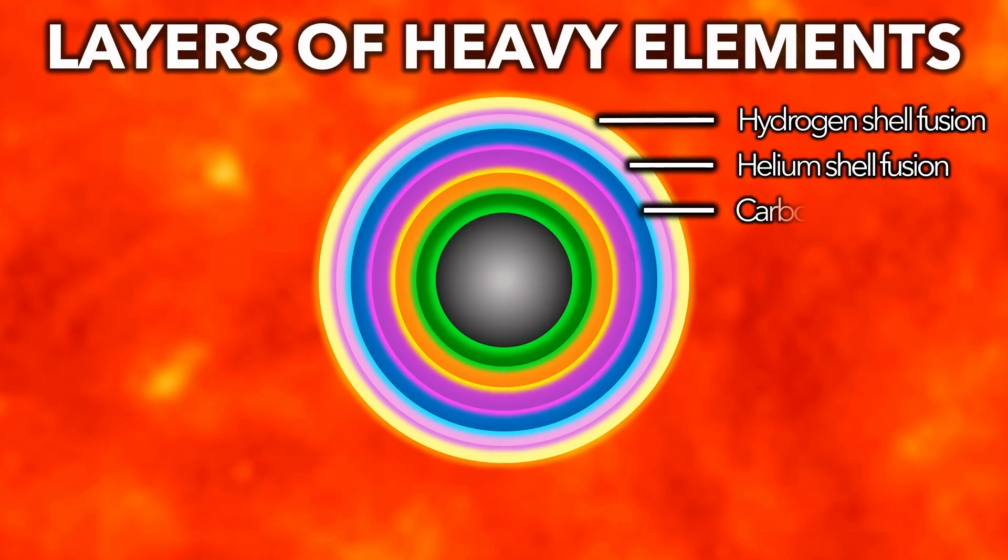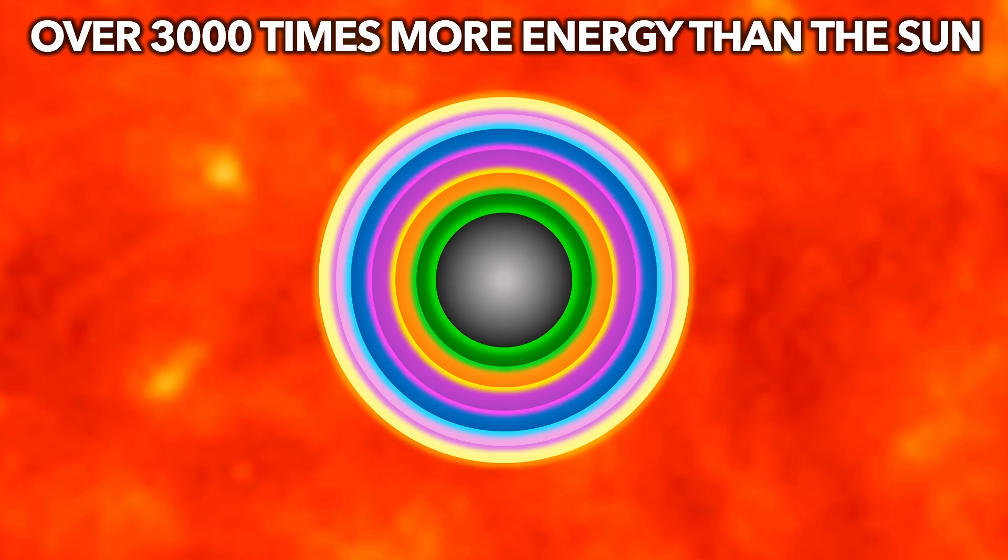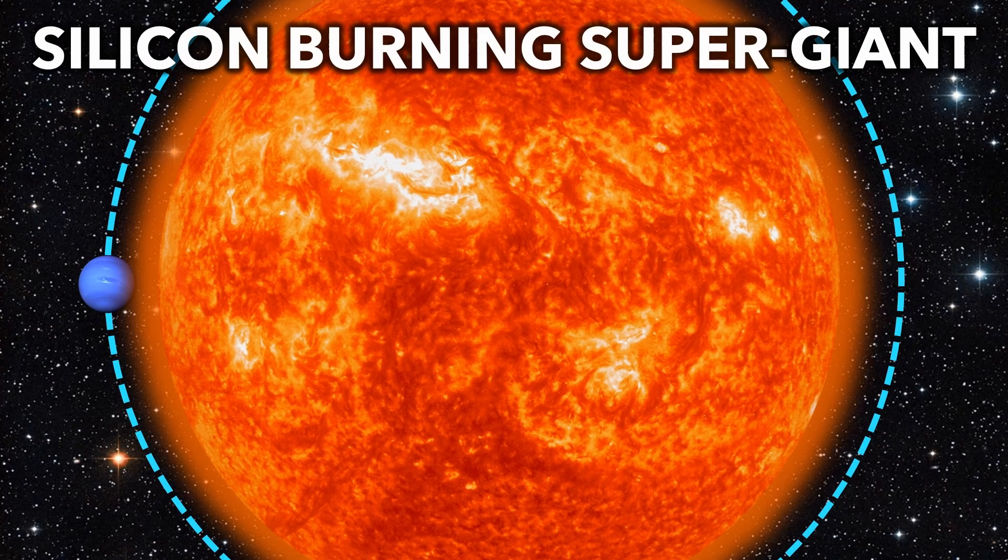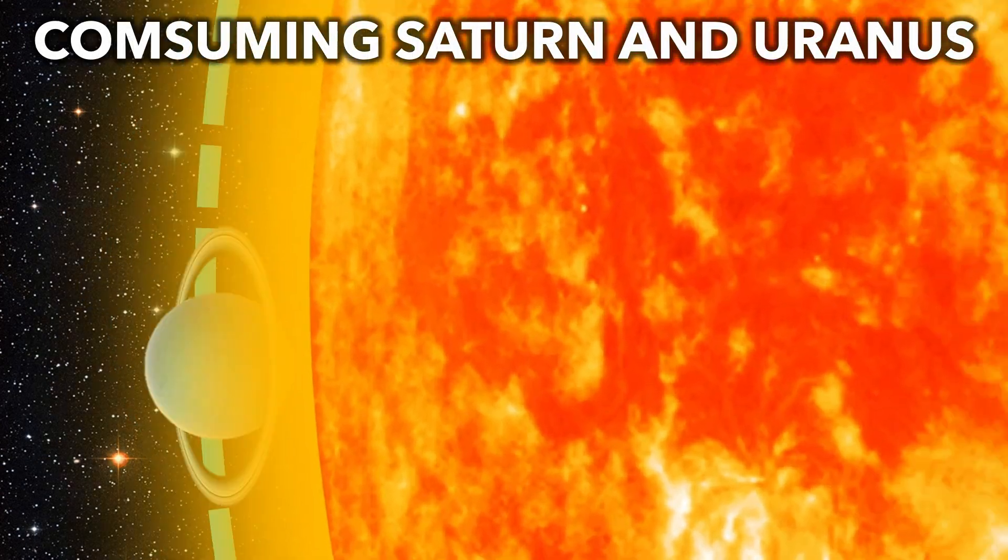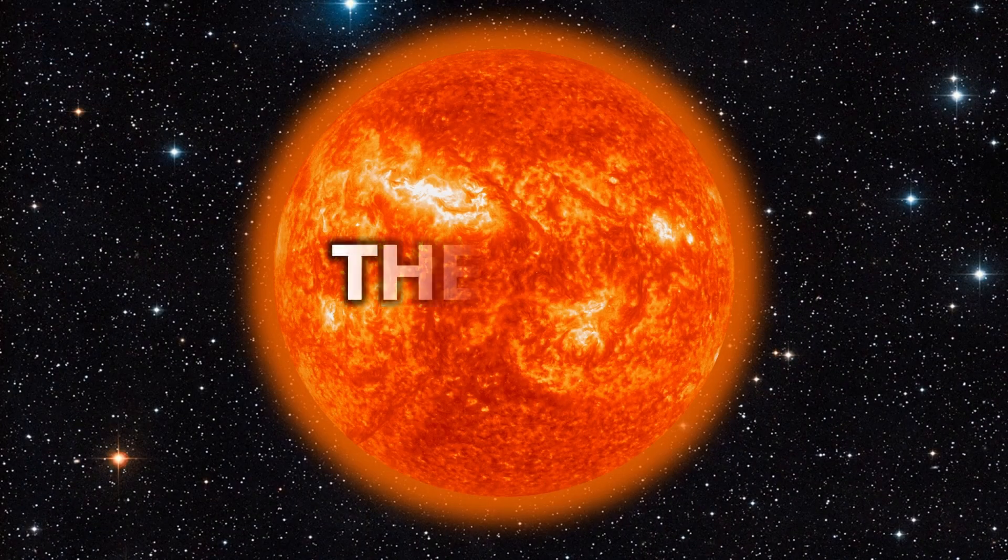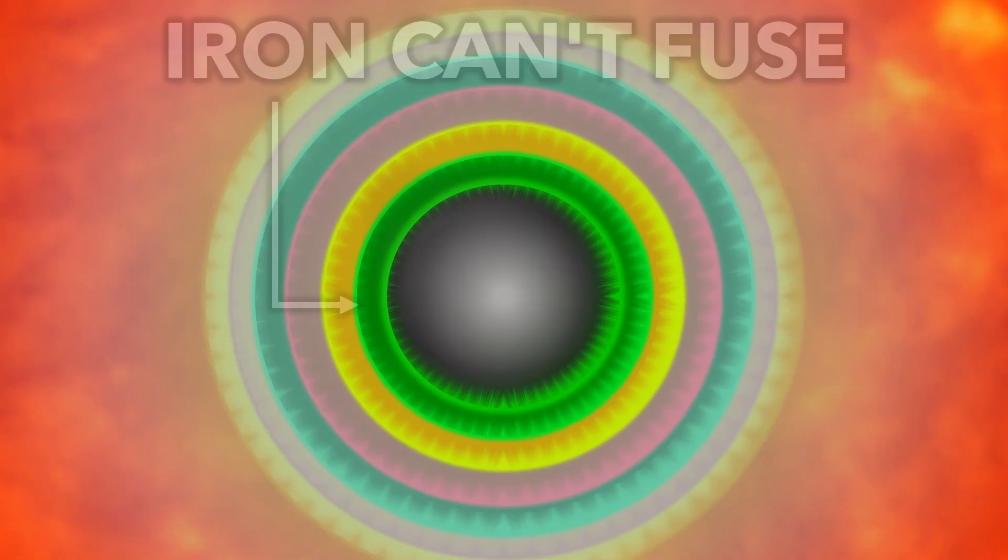As iron builds up, the core now resembles an onion. Energy production is enormous, making the star expand to 5000 times the Sun's radius, even engulfing Saturn and Uranus. But this is the end. Iron can't produce energy by fusion.